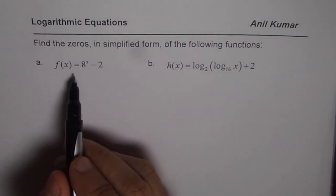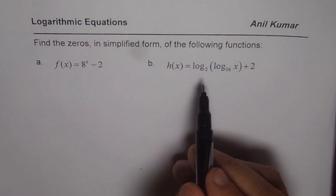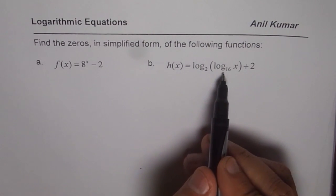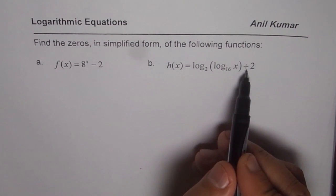First one is f of x equals 8 to the power of x minus 2. The second one is h of x equals log base 2 of log base 16 of x plus 2.